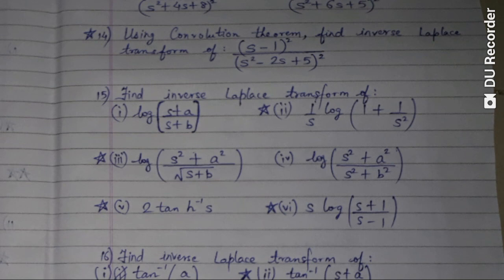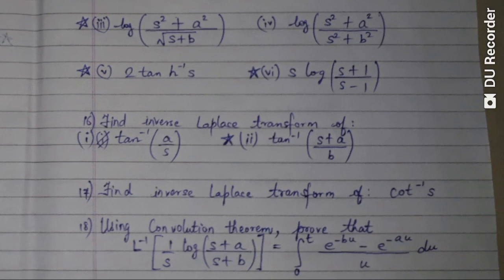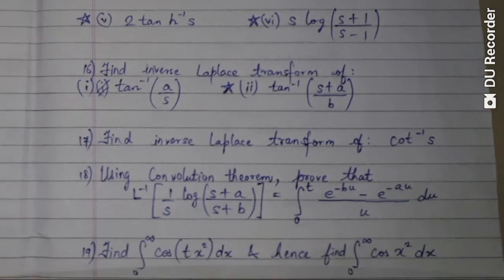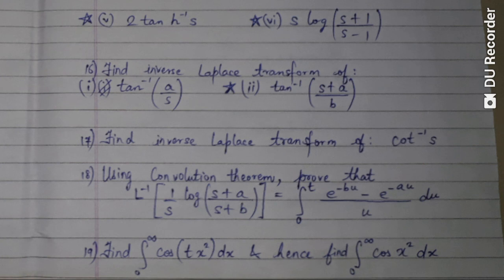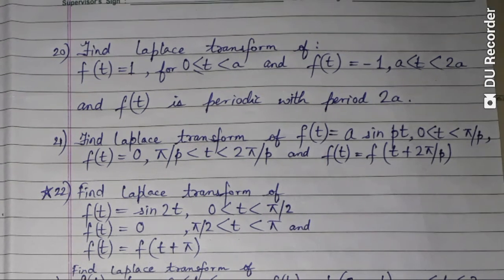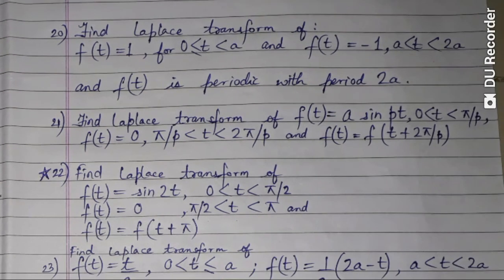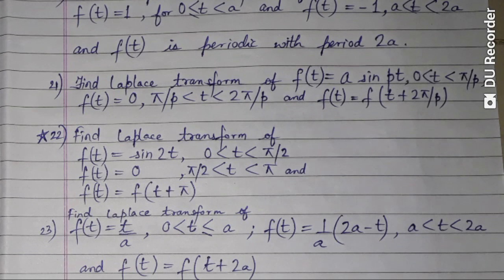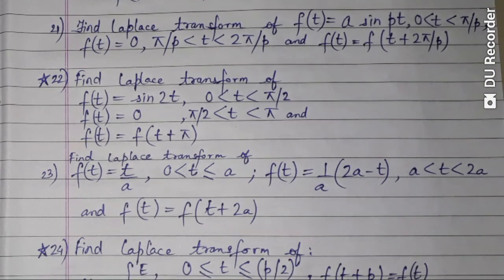Then we have question number fourteen and question number fifteen, where I have taken six sub-questions. Then question number sixteen, seventeen, eighteen, and nineteen — the last question on that page. Next is question number twenty: find the Laplace transform. Question number twenty-one, and question number twenty-two is marked with a single star, meaning it came from 2014 to 2018.